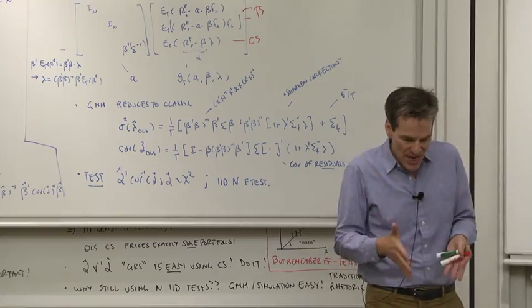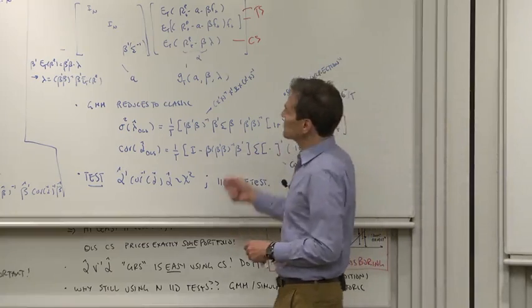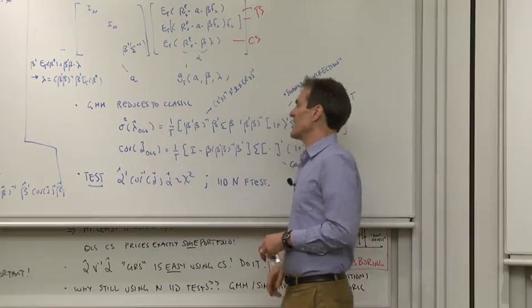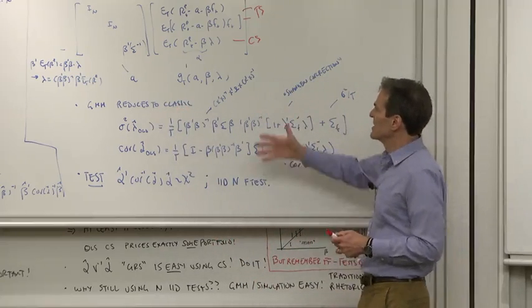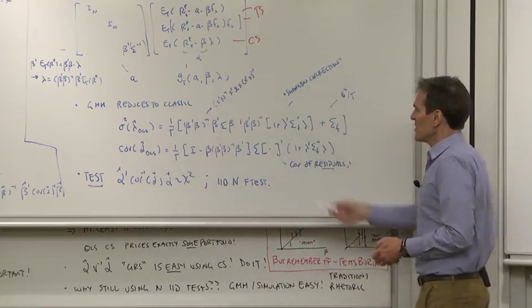As usual, when we do GMM approaches to ordinary least squares regression, if you assume IID normal errors, it reduces to the classic formulas, and it just becomes a clean, easy way of deriving the classic formulas.